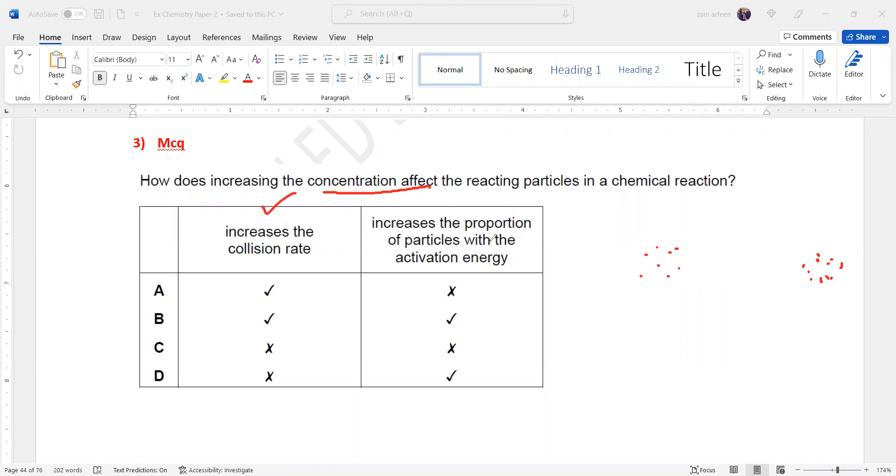But increasing the proportion of the particles with activation energy means greater number of the particles have energy more than activation. That is not correct.